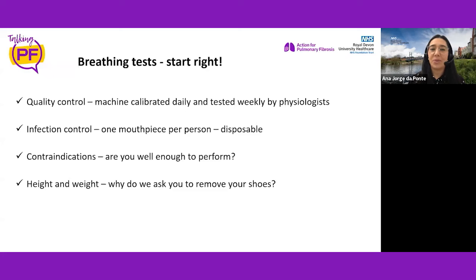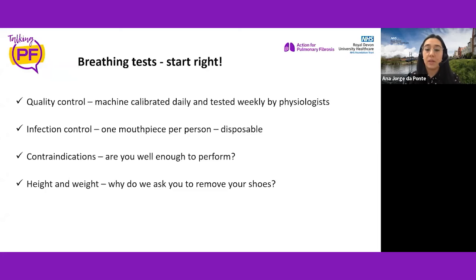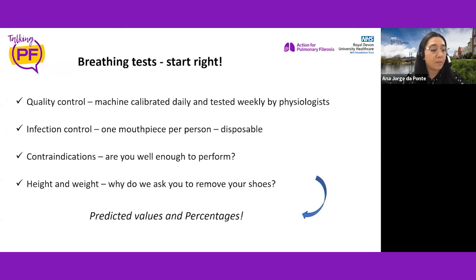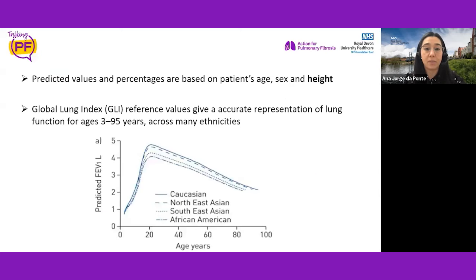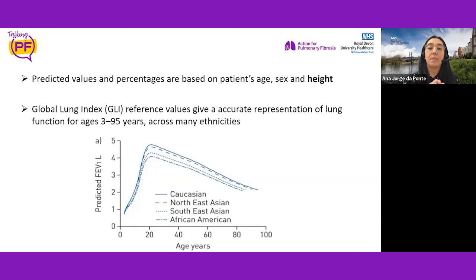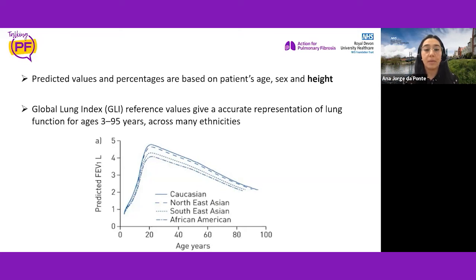You might wonder why we ask you to remove your shoes. That comes down to predicted values and percentages. When you ask what percentage your lung function is, it's highly based on your age, sex, and height — and even two centimetres can make a difference. Predicted values are acquired by the Global Lung Index organisation, which takes lung measurements from healthy patients aged three to 95 worldwide, so we know what lung function should be for that age, sex, and height.